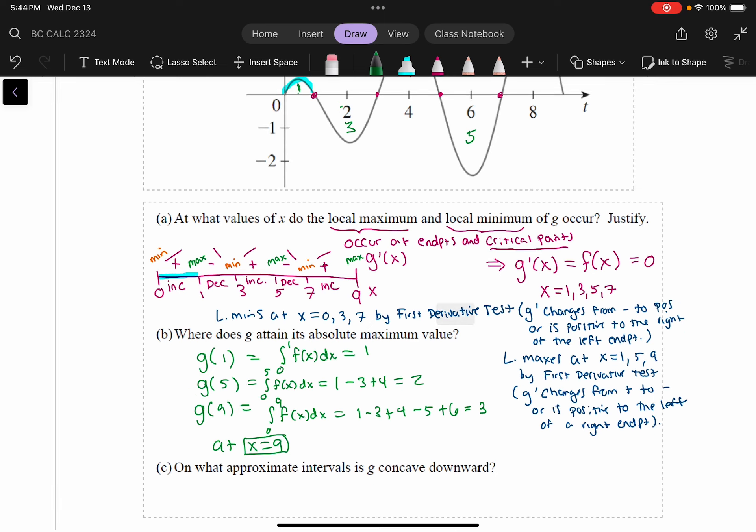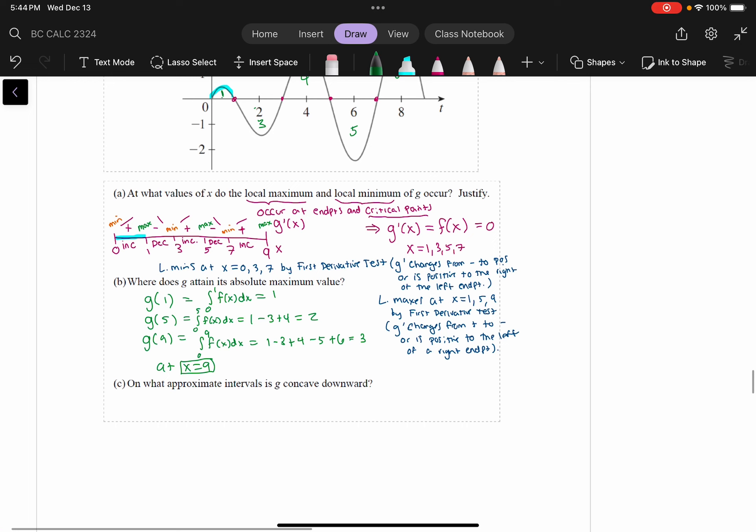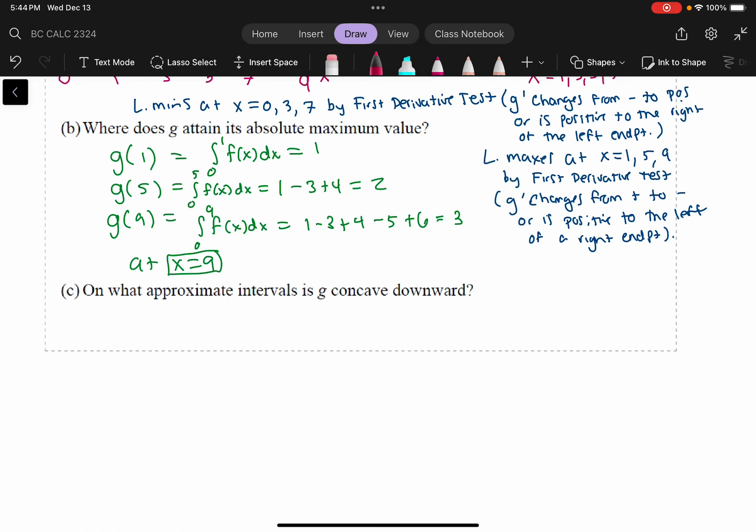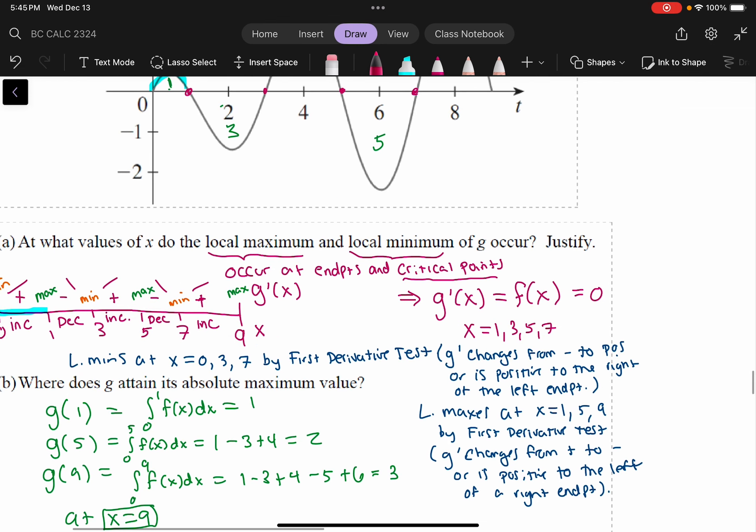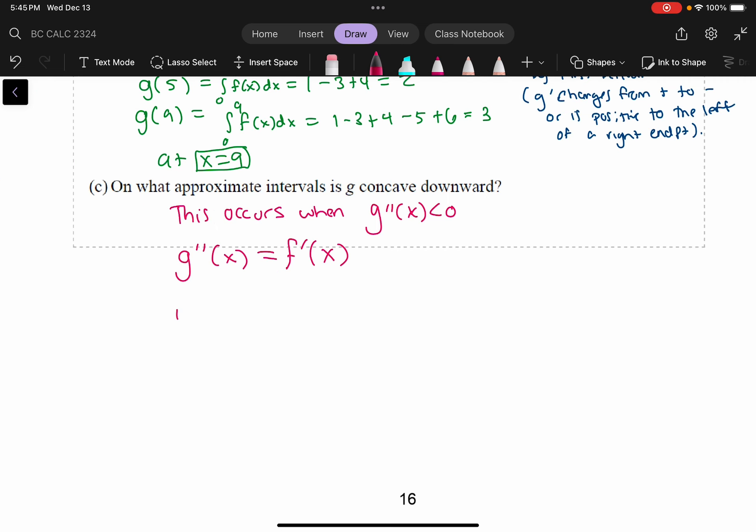Okay, and then the last question. Now, what approximate intervals is G concave downward? Well, a function is concave down when the second derivative is, so, this is going to occur when the second derivative is negative. So, we've got to take the derivative of the derivative. So, go back up here. We know that G prime is equal to F. Therefore, G double prime is equal to F prime.